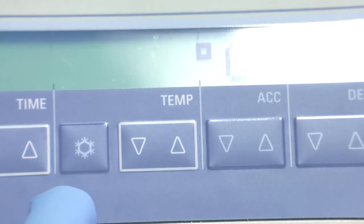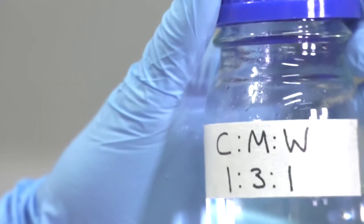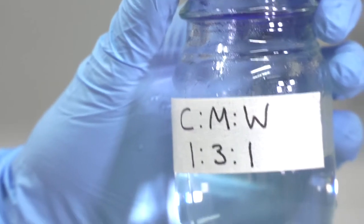Before we start the extractions, we need to prepare our equipment. Cool a centrifuge to 4 degrees C. Prepare the solvent, usually chloroform, methanol, water, in a ratio of 1 to 3 to 1, and place in an ice bath.